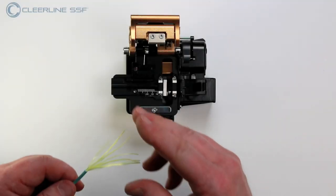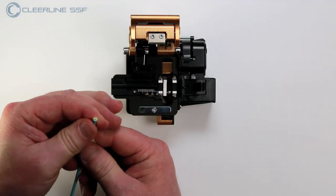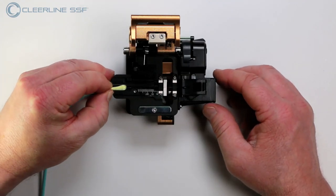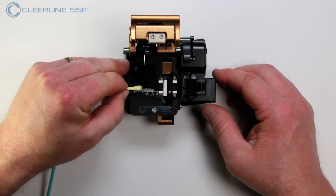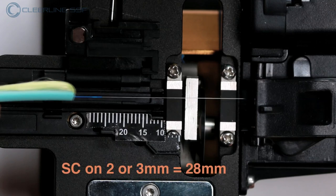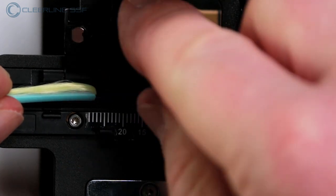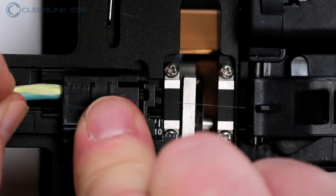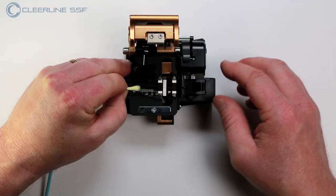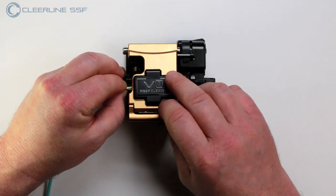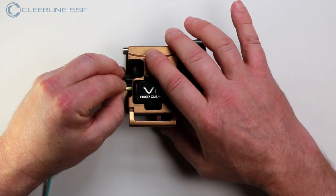To cleave the fiber for the SSF-SC type termination, hold the fiber at a slight angle downward and place the cable jacket at the 28 mm mark on the cleaver. Ensure the fiber is straight in the groove and across the two paths being placed at a 90 degree angle to the cleaver wheel. Close the cover on the cleaver and firmly push the cleave wheel forward.